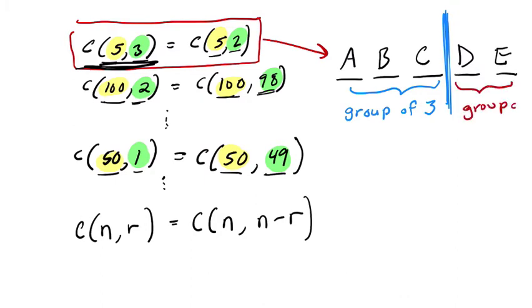So here, what's fascinating is that if you're picking 3 letters, you are not picking 2. In other words, every time you pick a group of 3, you're also leaving out a group of 2.